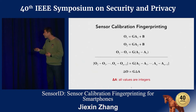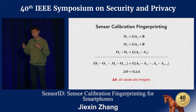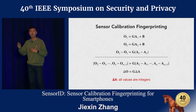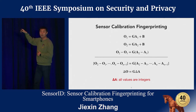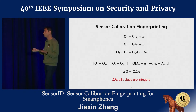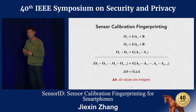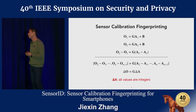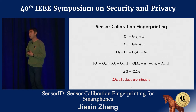Here is how the attack works. We first collect a few data samples from the sensor. Then, by subtracting consecutive sensor measurements, we can effectively remove the bias from this equation. Eventually we get: delta O equals the gain matrix G times the matrix delta A. However, we still only know the value of delta O, the difference between the sensor outputs. Normally it would be impractical to infer the gain matrix G because we don't know what delta A would be.